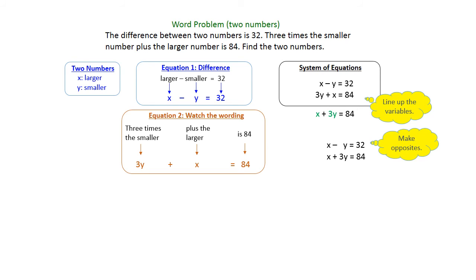And we need to make some opposites. I'm going to go ahead and make x's opposites, because the number is already the same. Those are both 1s. So all I have to do is, since they're the same sign, make one of those equations negative.